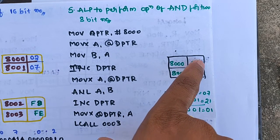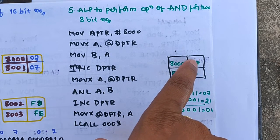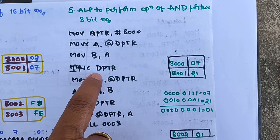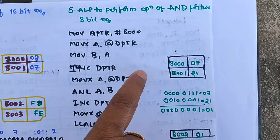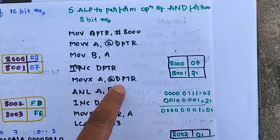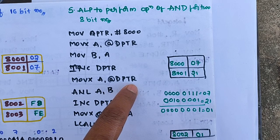I'm going to transfer this content to another register, the B register: MOV B, A. After that, I'm incrementing the data pointer to 8001: INC DPTR, then MOV A, @DPTR.